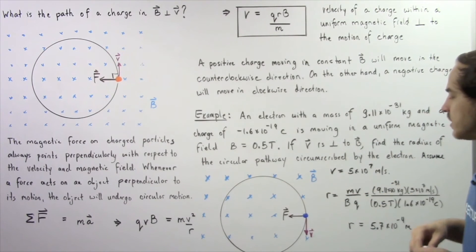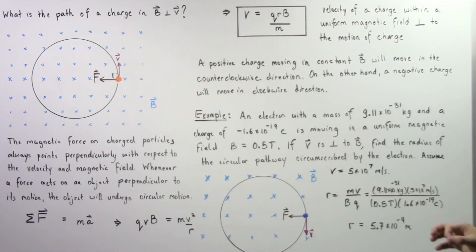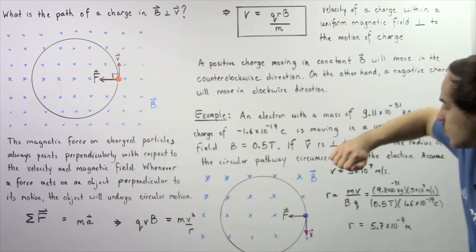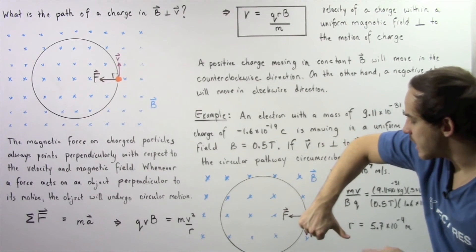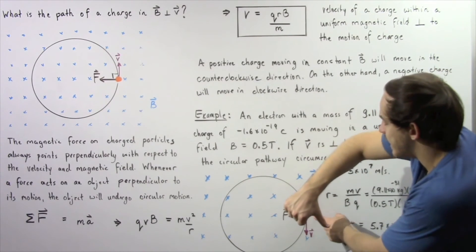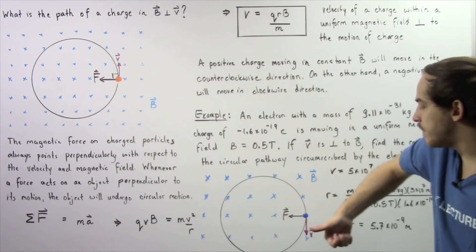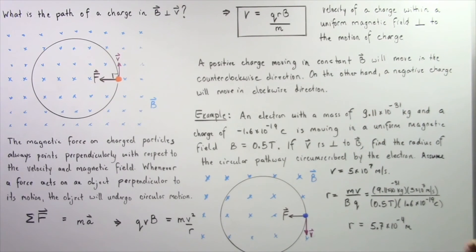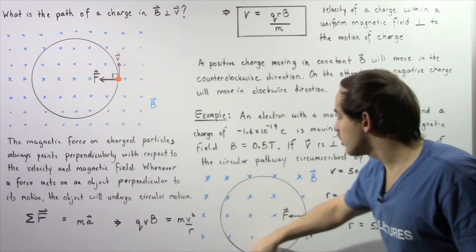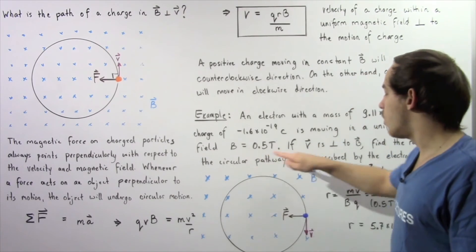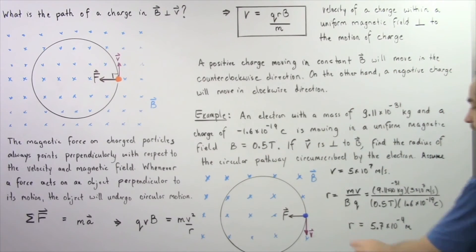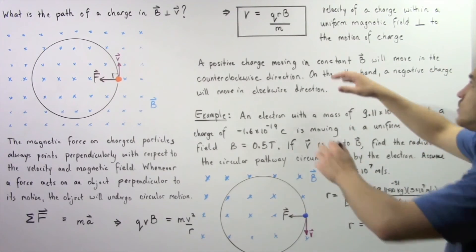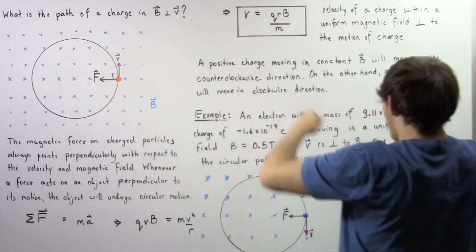We apply our right-hand rule and calculate that the force points in this direction — we go down this way, we extend our thumb, and because it's a negative charge, we flip the force, and the force points in this direction. So our charge will accelerate in the following clockwise direction. To calculate the radius of the circumscribed pathway, we use this equation and solve for R.